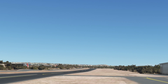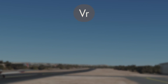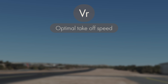Next we'll take a look at VR, which is the optimal takeoff speed. When you're cruising down the runway and about to take off, VR is the point at which you're going to pull back on the stick and rotate, essentially causing the plane to leave the pavement and take flight. In the PA-28, VR is 60 knots.